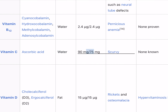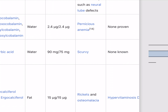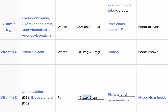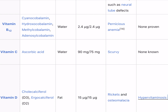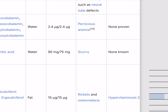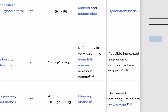Vitamin C (ascorbic acid) is water-soluble; 90 mg/75 mg recommended. Deficiency causes scurvy; sources include many fruits and vegetables and liver. Vitamin D (cholecalciferol D3, ergocalciferol D2) is fat-soluble; 15 micrograms recommended. Deficiency causes rickets and osteomalacia; excess causes hypervitaminosis D. Sources include liver, certain fish species such as sardines, and certain mushroom species such as shiitake.